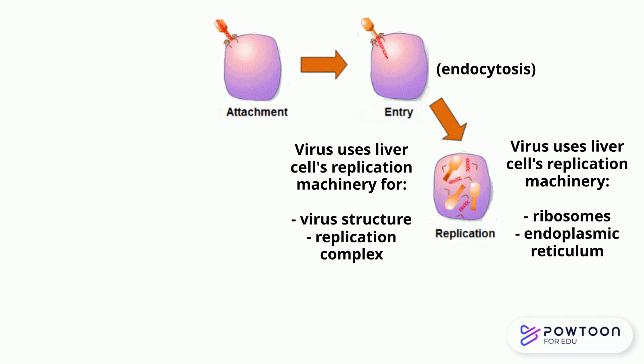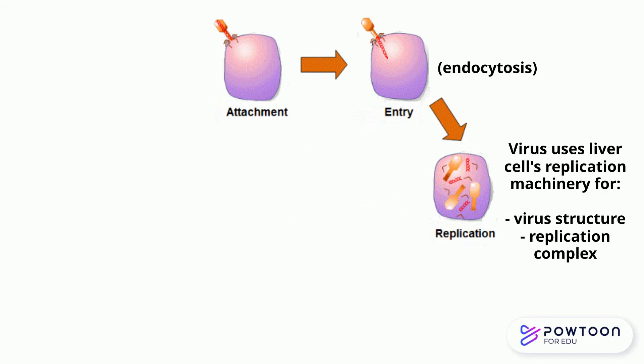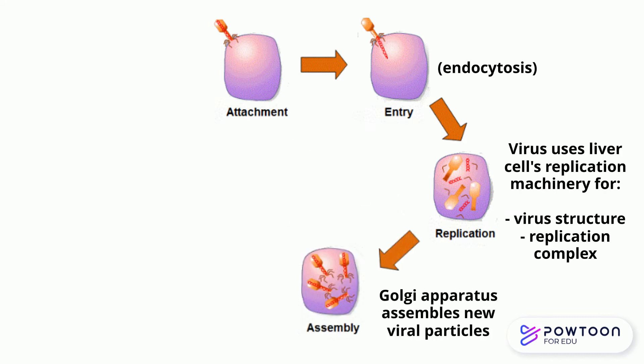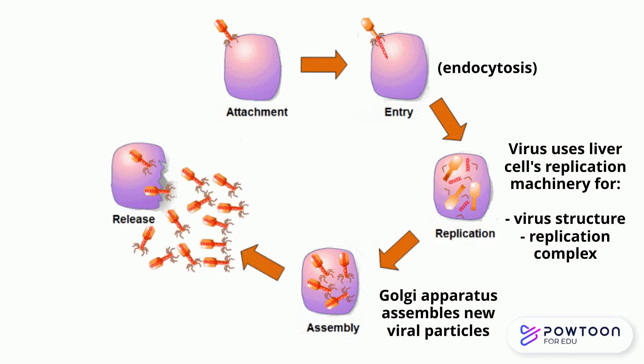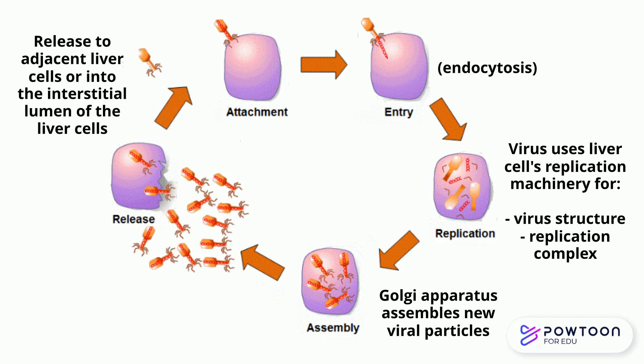Finally, the liver cell's Golgi apparatus helps to package the new viral particles that will be released to the outside of the cell or to adjacent liver cells, eventually infecting them. In simple terms, the molecular mechanism of infection by the hepatitis C virus is through the process of receptor binding and endocytosis.